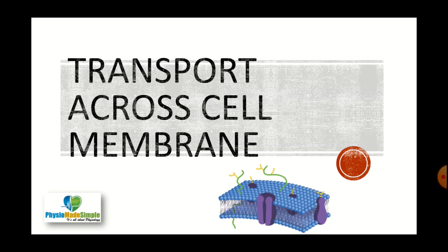We all know that the food we consume is digested in our digestive system. It is absorbed into the blood, which transports and delivers those nutrients to the cells. The cells accept them and utilize them to produce energy. Energy is stored in the form of ATP — adenosine triphosphate — and waste materials are formed after the metabolic activities of the cell.